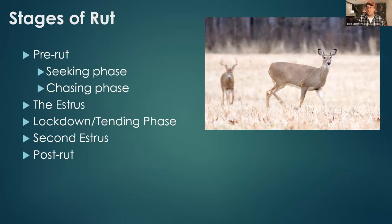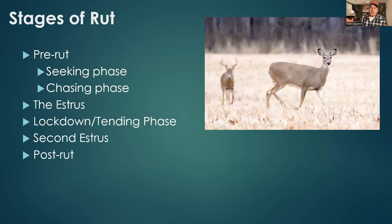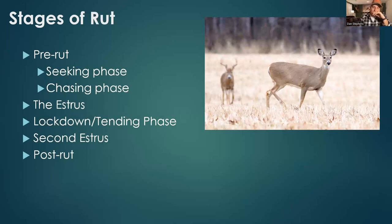There are many theories about what causes rut — lunar phases, temperature — but while those impact deer movement, they do not trigger rut. What actually starts rut is photoperiod: the amount of daylight in an individual day. That's why peak rut falls in the same time frame year after year — it's consistent, not driven by lunar cycles or temperature. Those things can still impact movement, but they don't trigger rut.